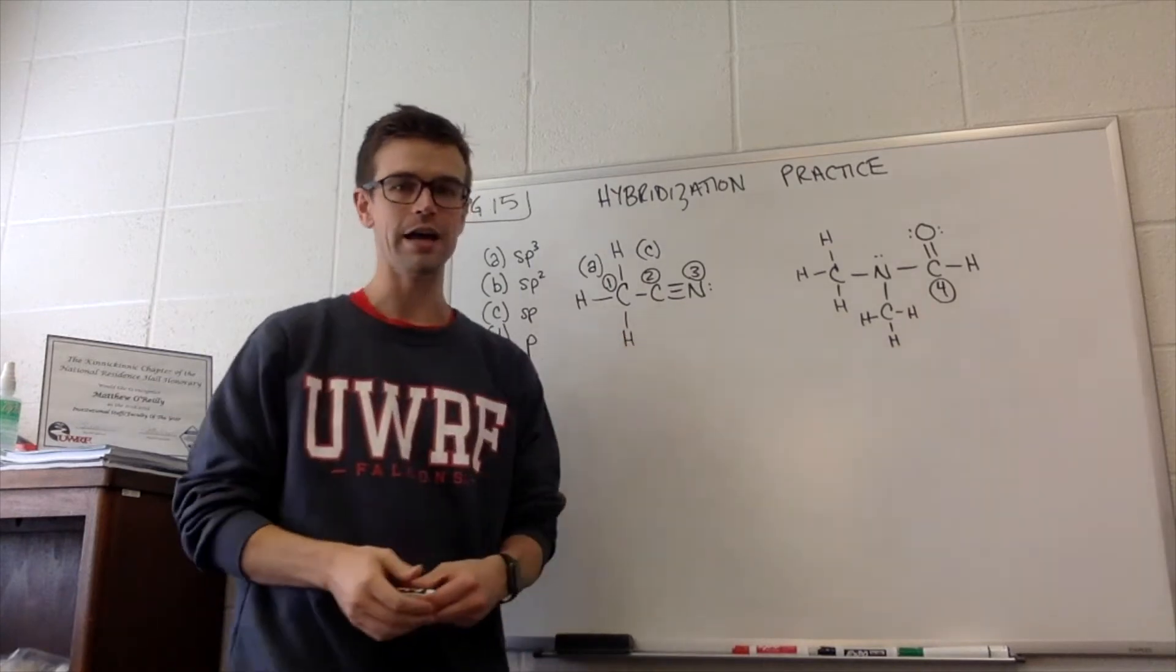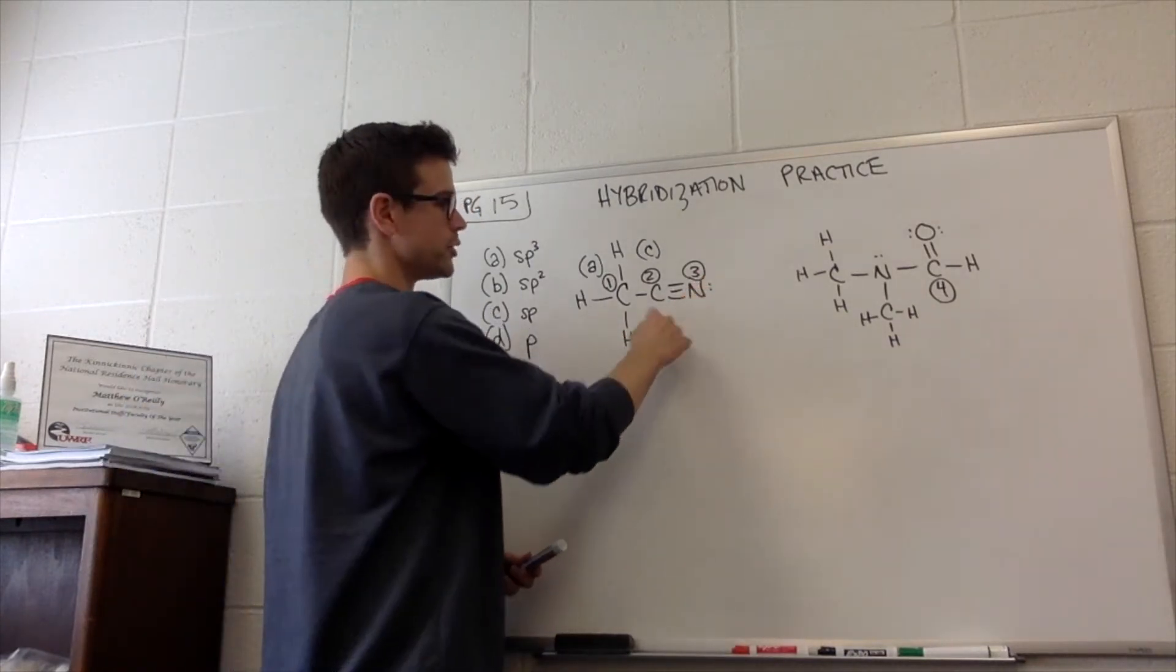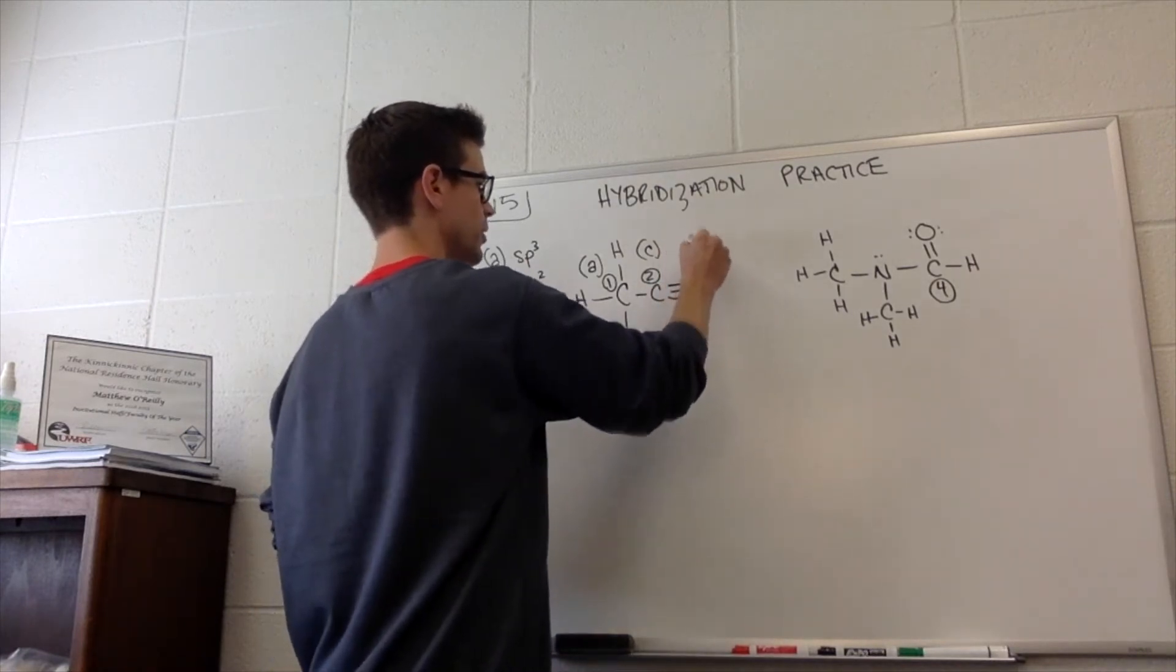What about this nitrogen? Nitrogen has, again, two groups. This lone pair is one group. This triple bond is the other group. Answer is going to be C.